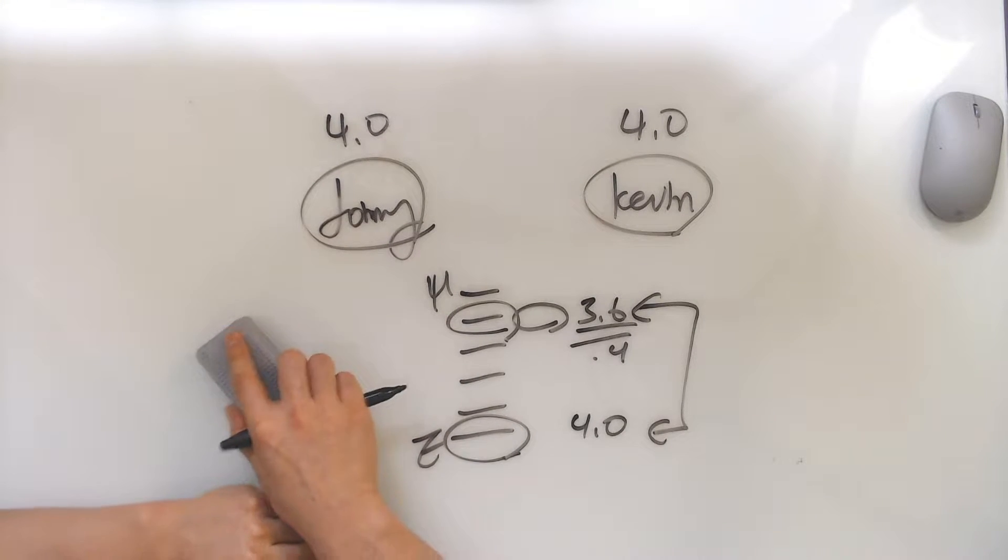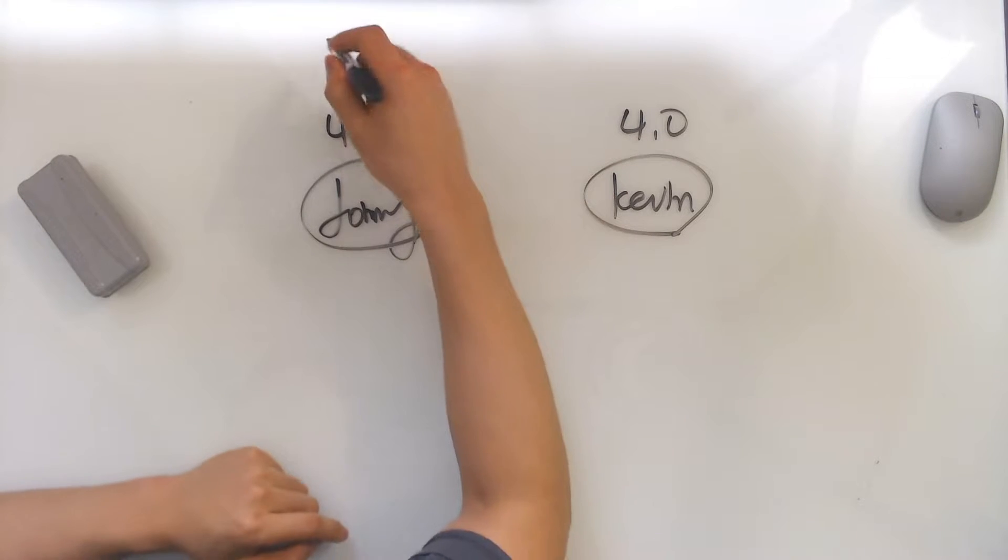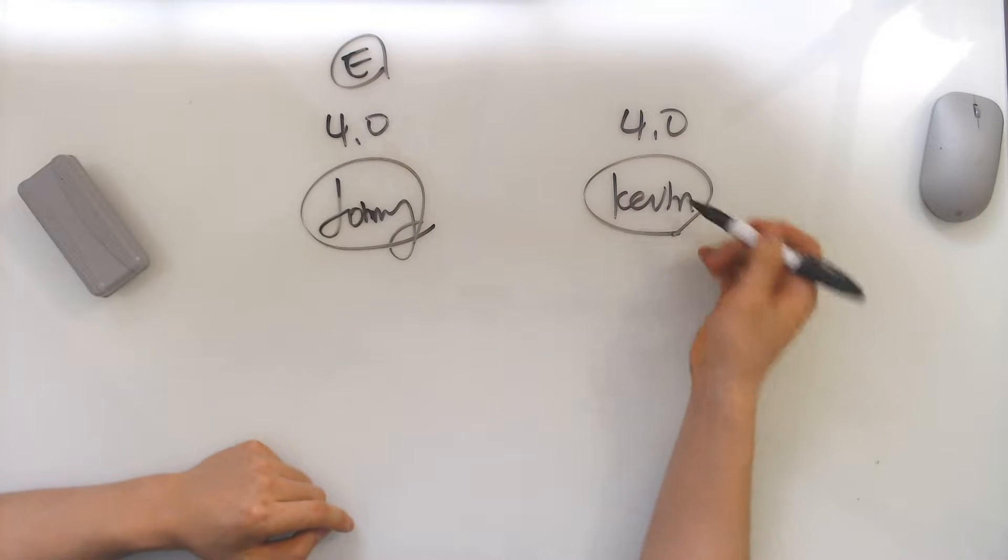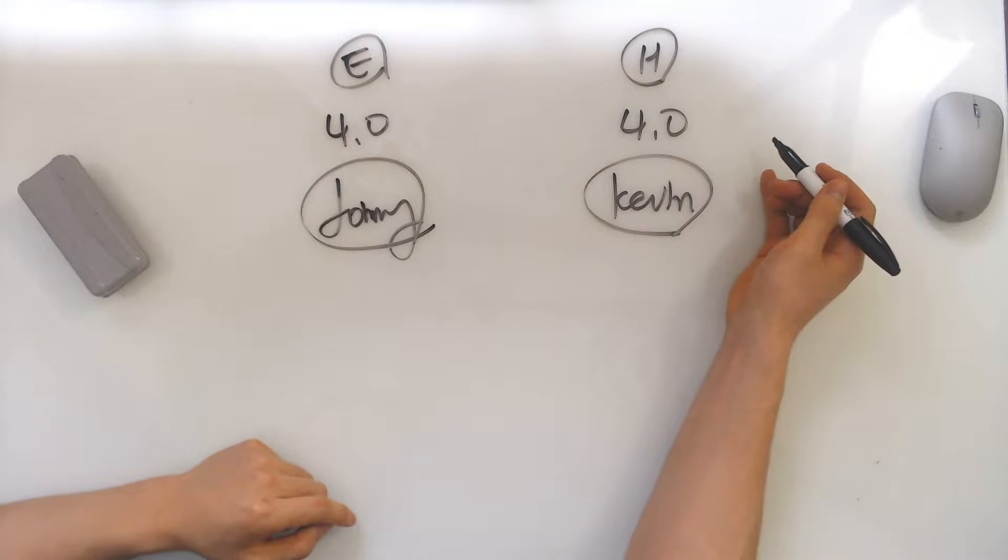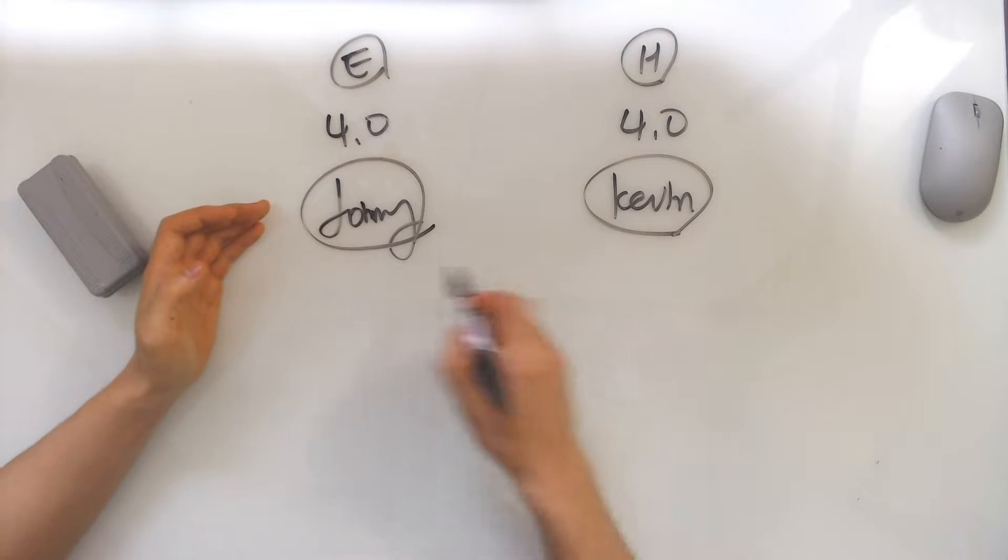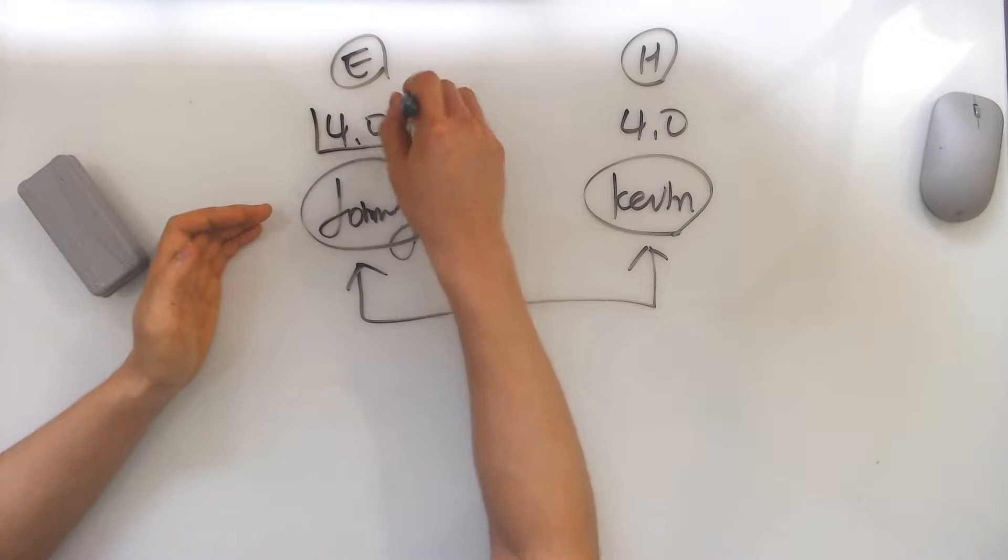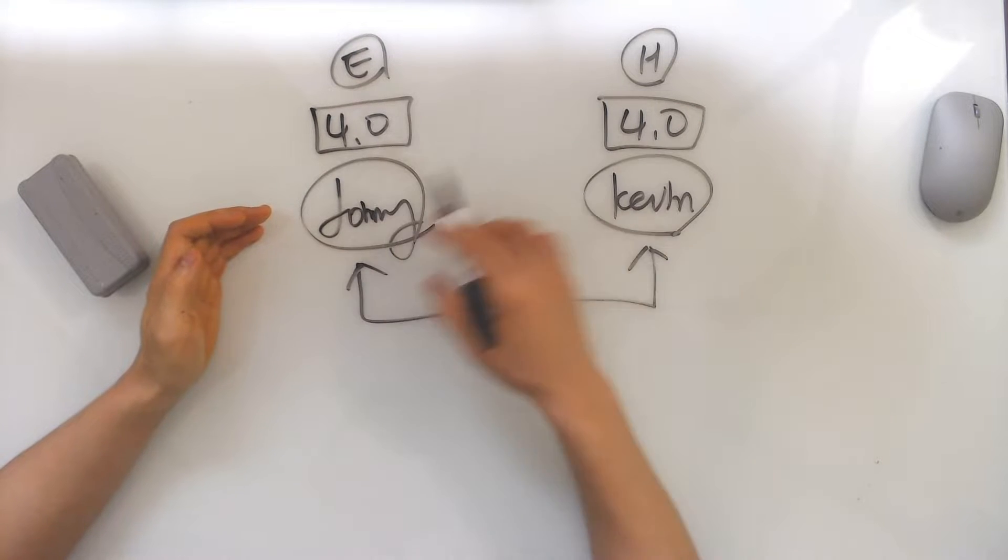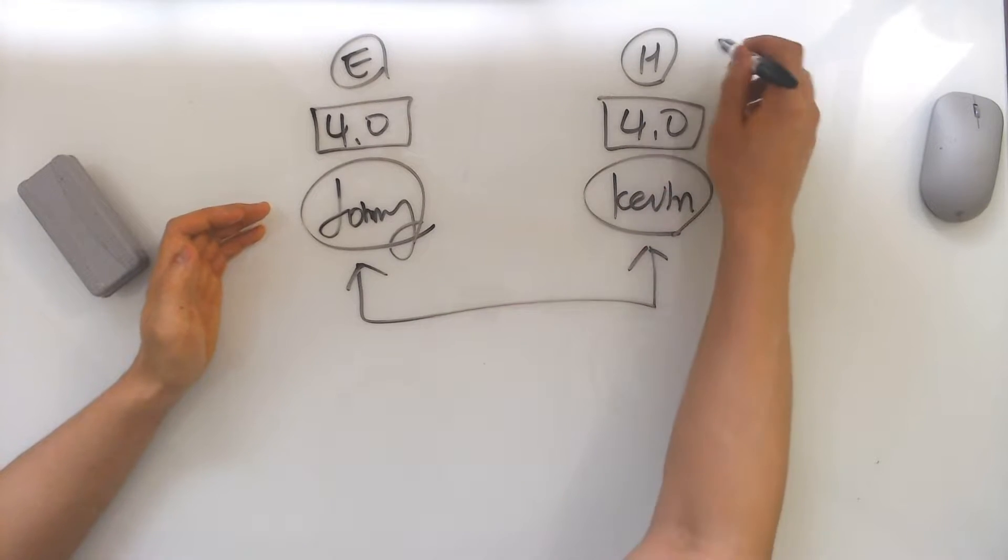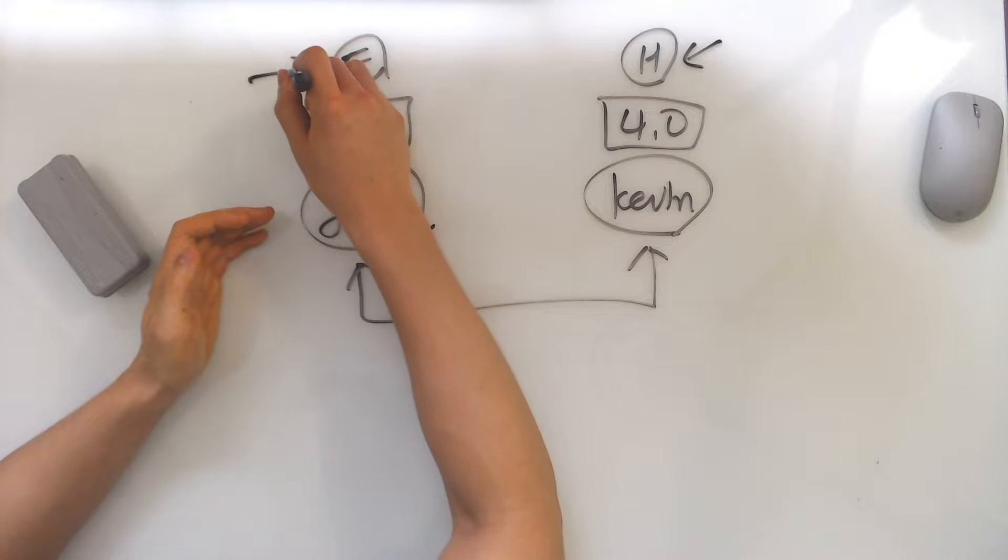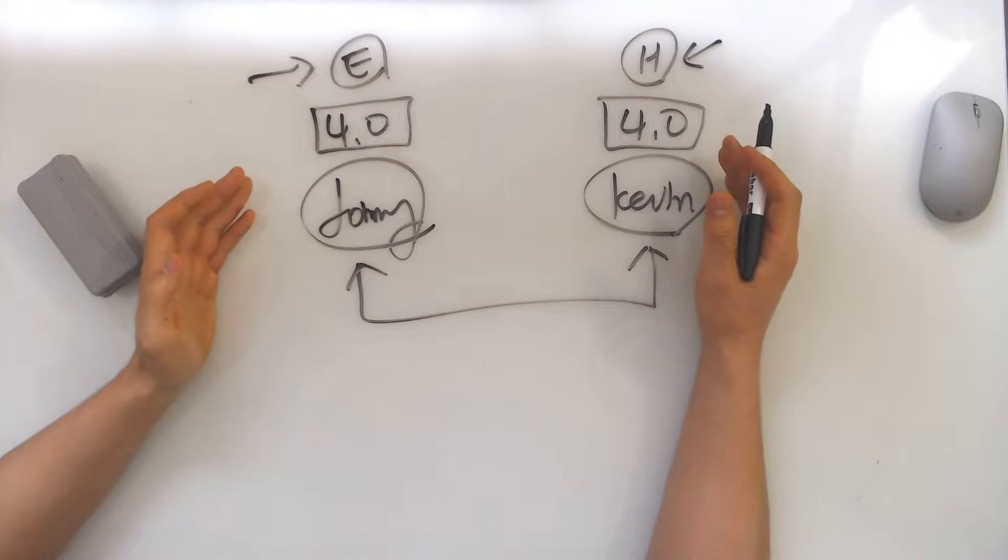So let's come back to Johnny and Kevin. Let's say John got a 4.0 from a super easy school and Kevin got a 4.0 from a super hard school. And when they apply to colleges, they're going to send in their application, add their GPA, and they're both going to say 4.0. John and Kevin know that Kevin got a 4.0 from a harder school and John got a 4.0 from an easier school. But the thing about colleges is that they don't know how difficult your school was.